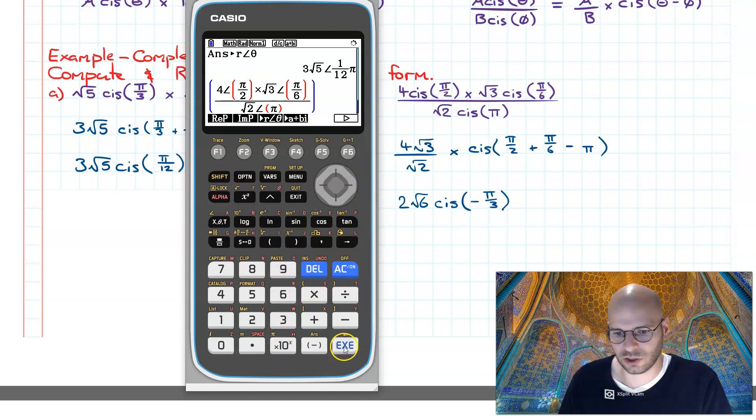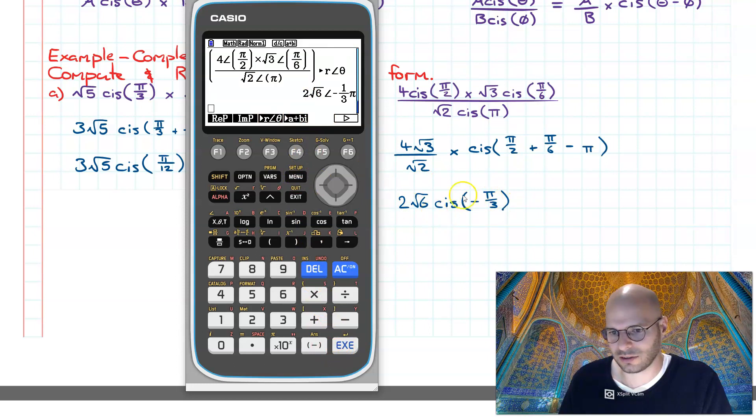I can go execute and of course it's going to give it to me in Cartesian form, or I can go polar in one go by using this operator, and lo and behold it gives me my answer as expected.